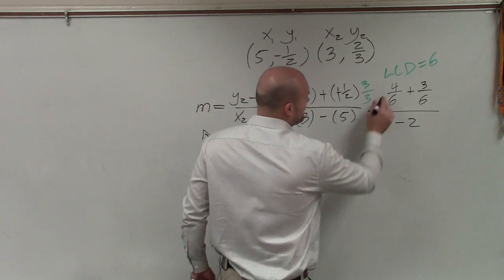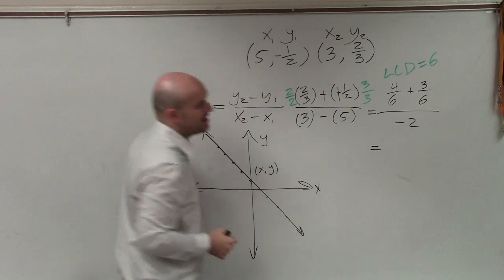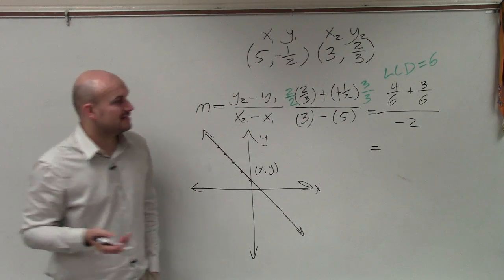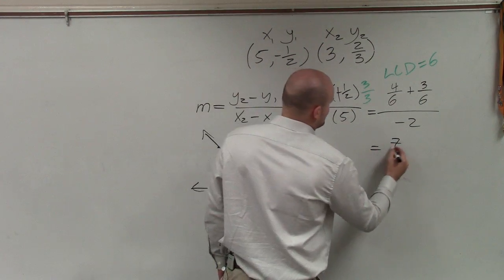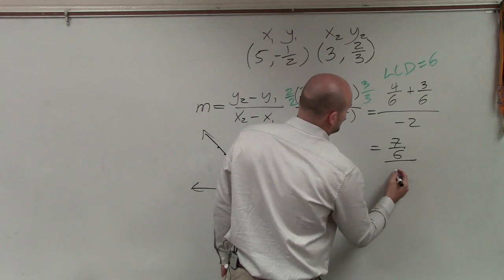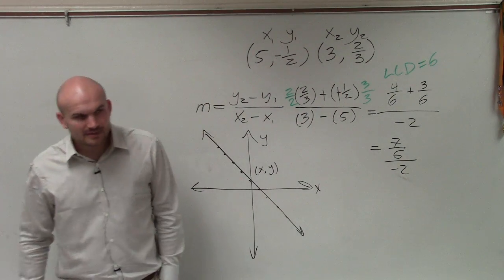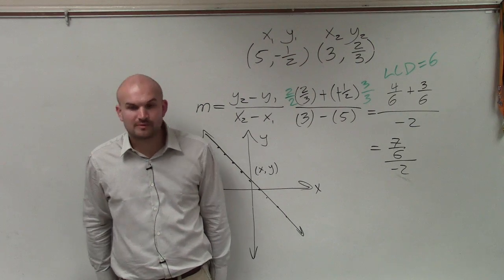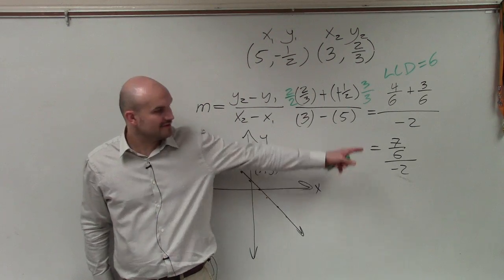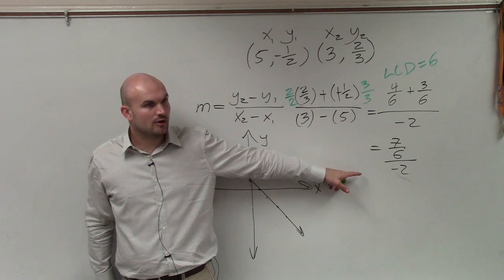4 plus 3, now we're adding fractions, and we have the same denominator. So we can just add the numerators, which would be 7 over 6 divided by negative 2. Now, if you guys remember the beginning of the year when we learned operations with fractions, I have a fraction divided by a whole number.